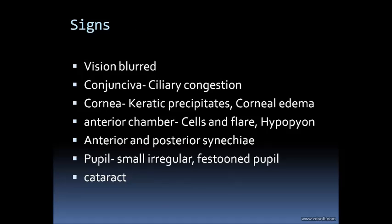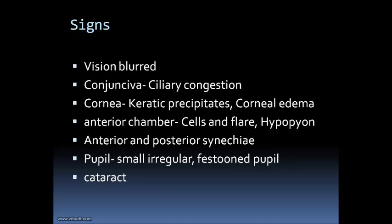When you examine patients with chronic iridocyclitis, you may find severe signs of inflammation despite few symptoms. The signs of iridocyclitis include blurred vision — which may sometimes be normal in initial presentation — ciliary congestion, corneal edema, and leukocyte deposits on the posterior surface of the cornea called keratic precipitates, which are very typical of iridocyclitis.